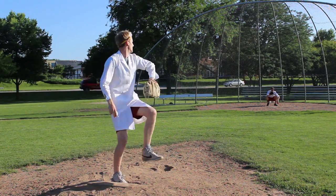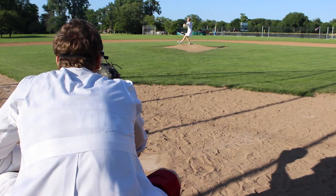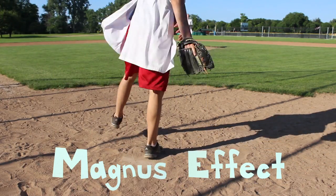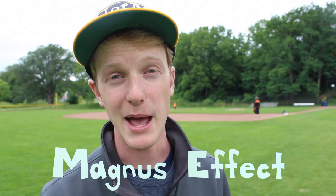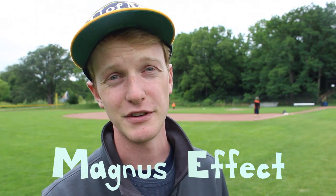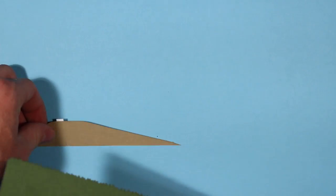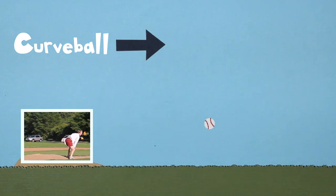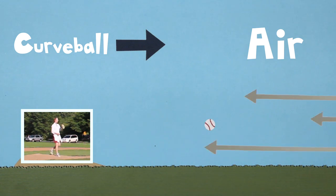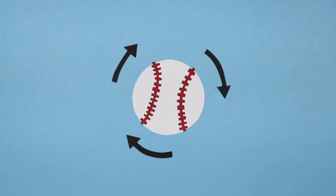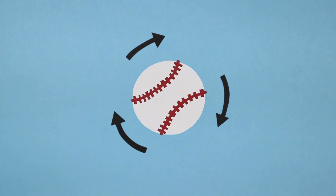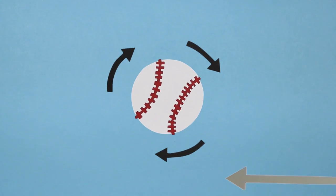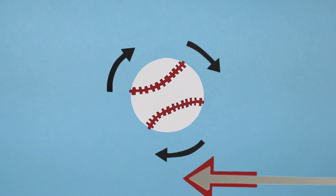As a curveball travels towards the catcher, it maintains this front spin, and the Magnus effect comes into play. The Magnus effect — it's physics. So basically it's all about that front spin. If a curveball is traveling in this direction, air is moving past the ball in the opposite direction. So we can see that because of the rotation, the bottom of the ball is moving in the same direction as the air.